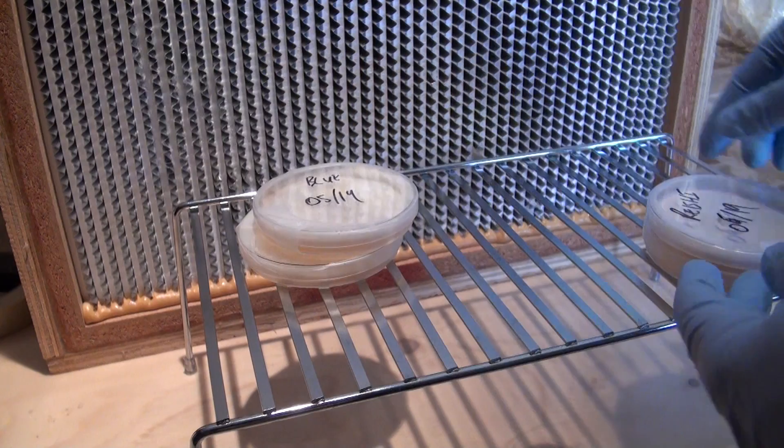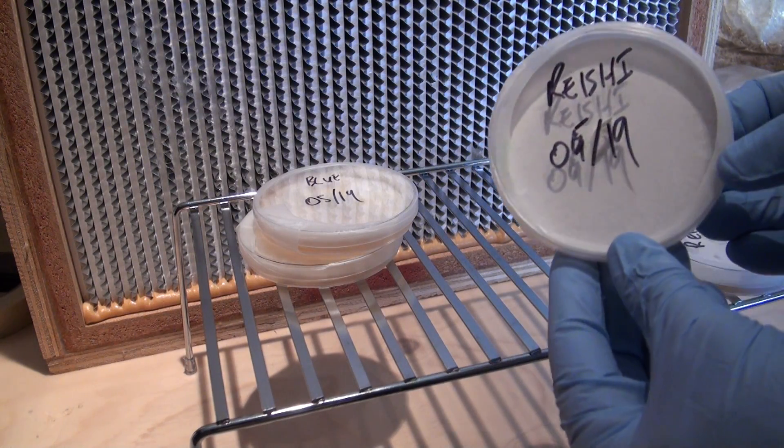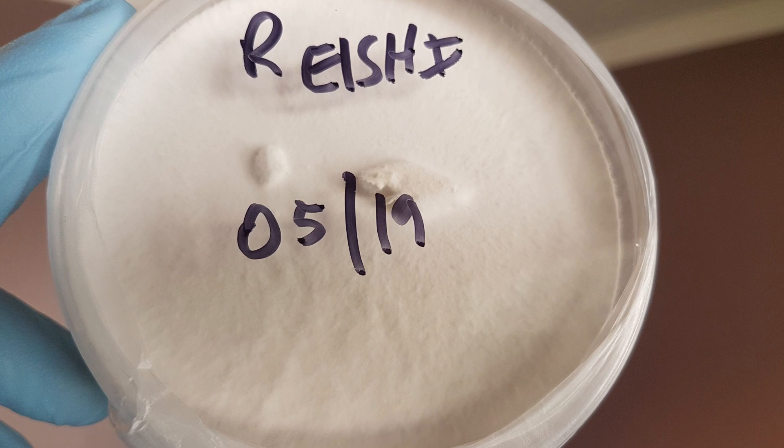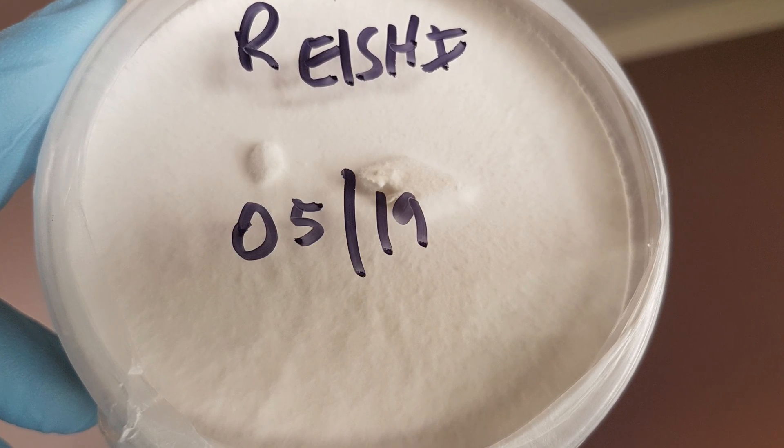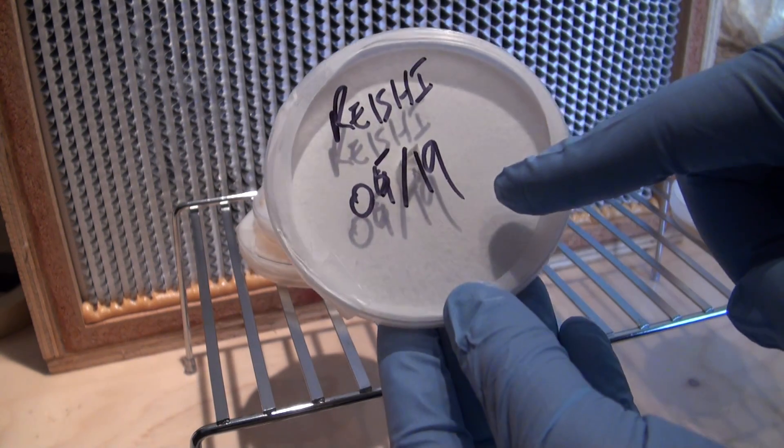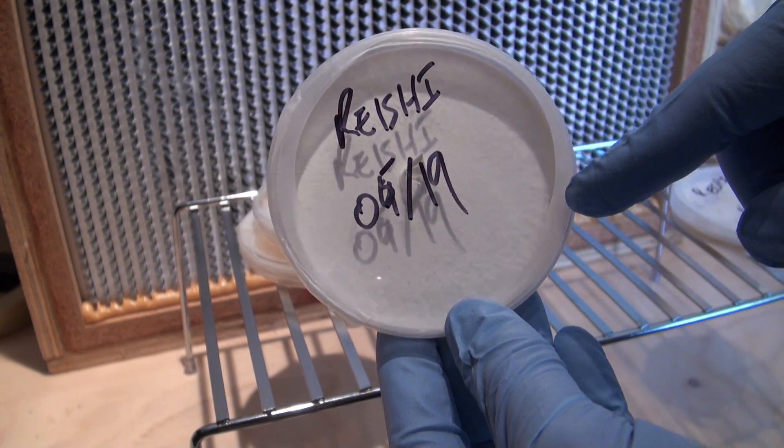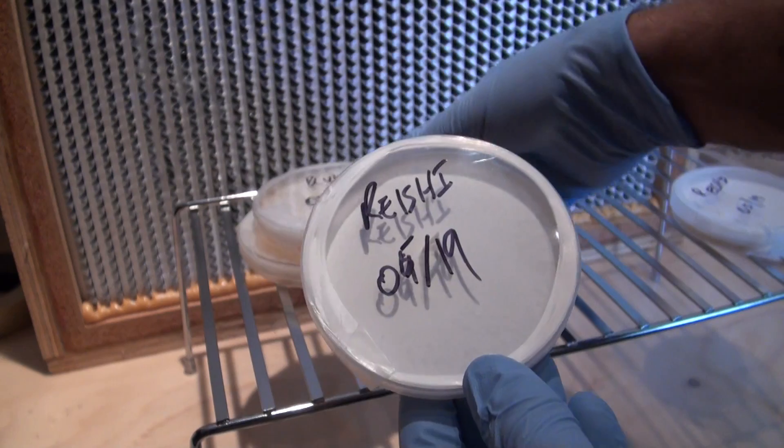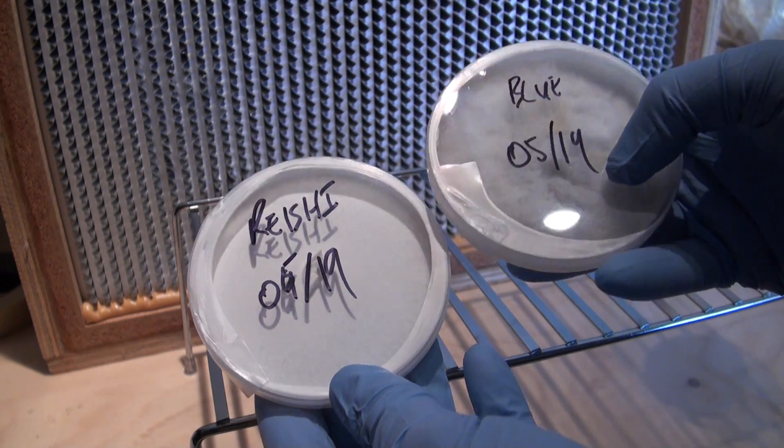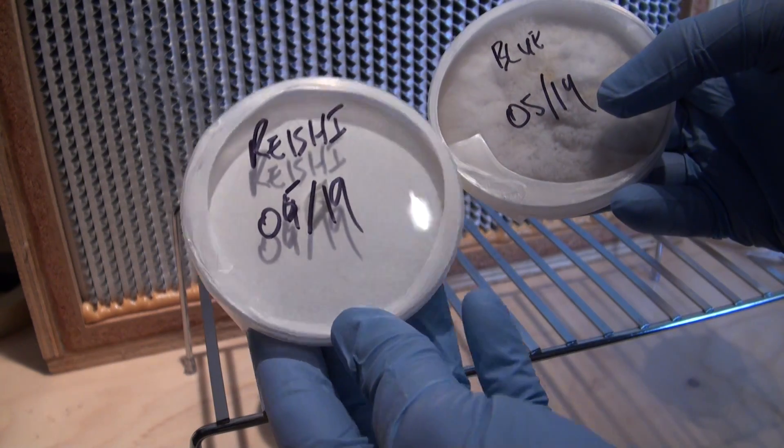This is the reishi mushroom mycelium. Reishi grows incredibly fast and incredibly strong. Looking at the reishi, you can see how uniform it is and how stark white it is. Reishi mycelium is really tough compared to blue oyster or any oyster. It's actually even hard to cut through with the scalpel.